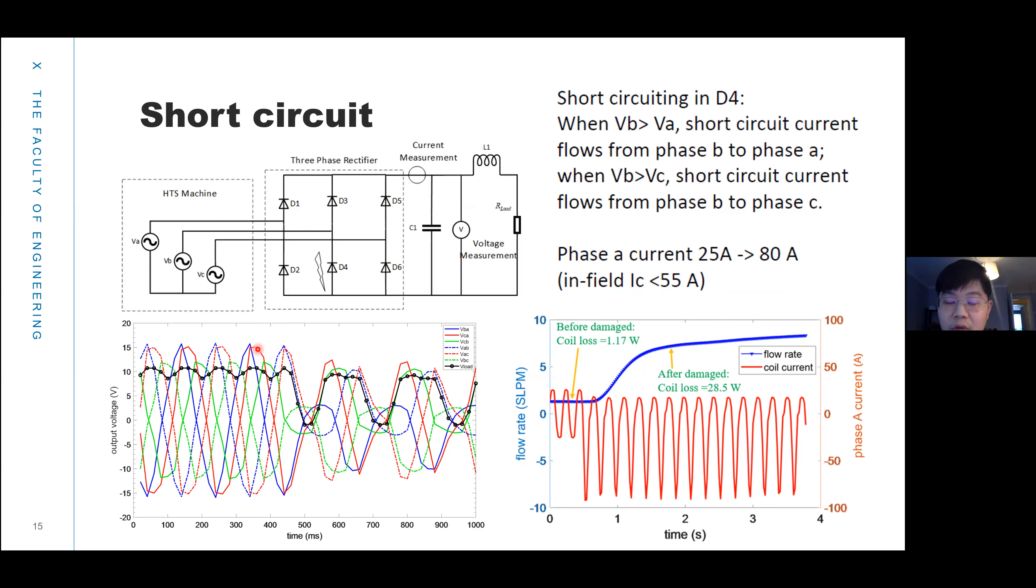After the short circuit test, we found the transport current in the HTS coil increased from 25 amps to 80 amps. The critical current for this coil is only 55 amps. We observed the flow rate. This is the measurement before the short circuit event, and the coil loss is 1.17 watts. After the short circuit event, there is around 90 amps in the HTS coil. After the short circuit event, the coil loss is above 28.5 watts, so it's around 28 times higher than before.